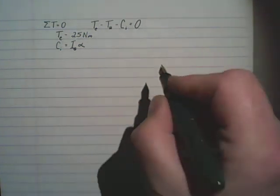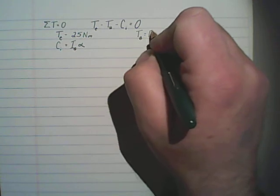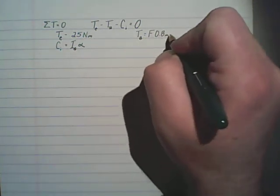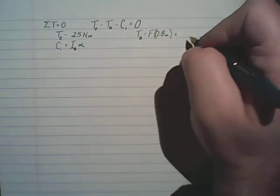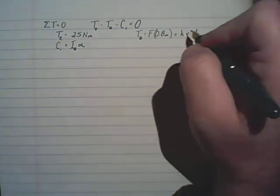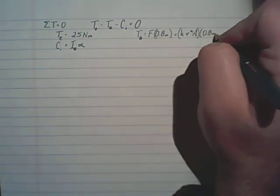By knowing that, we can say that T sub B is equal to a force times 0.8 meters. The force, as we already said, is equal to k v squared A times 0.8 meters.